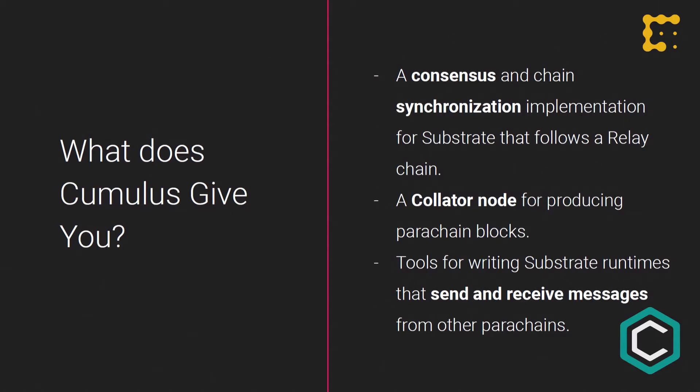To tie it all together: Cumulus gives you a consensus and chain synchronization implementation, an implementation of a collator node for authoring parachain blocks, and tools for writing Substrate chains that let you plug into message passing between chains via the Polkadot relay chain. You can think of the relationship between Polkadot and Substrate like a computer and a network card: Substrate is the computer doing specialized computation, and Polkadot is the network card letting blockchains talk to each other.